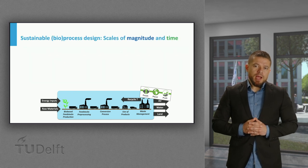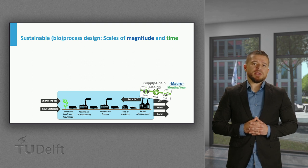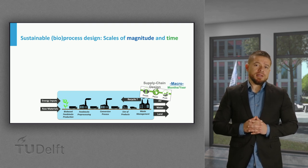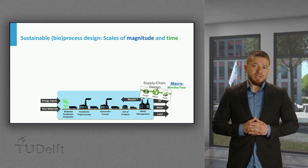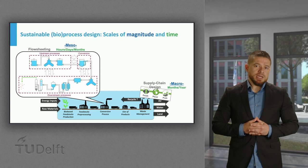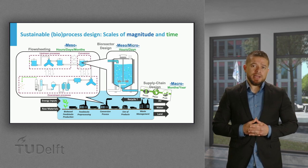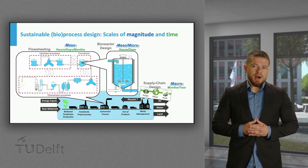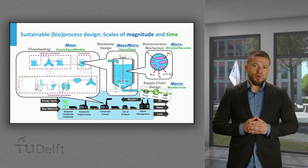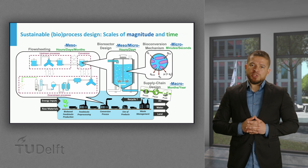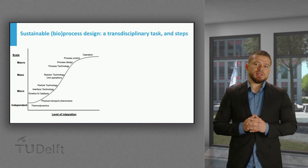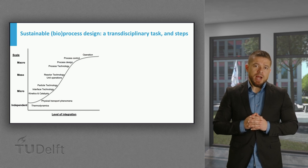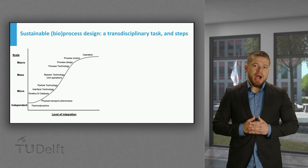For example, activities in the supply chain such as interactions among actors and material flows occur at the macro scale, in the order of months. The production process itself is a mesoscale system where operation may take just some hours or days. In the case of equipment, physical and chemical phenomena like mass and heat transfer or kinetics could take some hours or days — these are at the meso and micro scales. And finally, the actual bioconversion is the fastest process occurring at the smallest scale. Bioprocess design is thus a transdisciplinary task that integrates concepts, principles, and methods from multiple knowledge domains and across different scales.